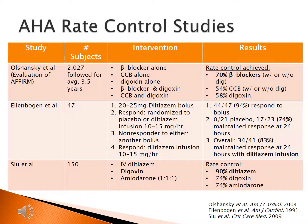Results of the Ellenbogen trial: of the 47 patients receiving the initial diltiazem bolus, 94% had a therapeutic response and were randomized. None of the placebo patients maintained response at 24 hours, whereas nearly three-quarters of the diltiazem infusion group maintained response. Overall, 41 of 47 patients received the diltiazem infusion, and 83% of them had a maintained response at 24 hours. The conclusion is that patients responding to diltiazem followed by an infusion can be expected to maintain response at 24 hours.